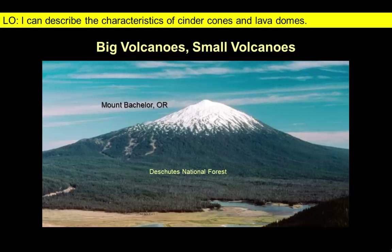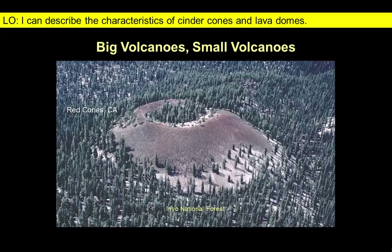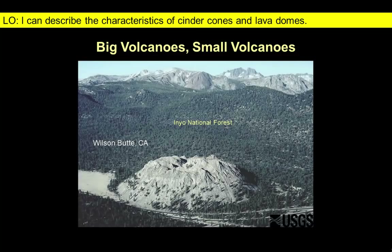One way to distinguish these volcanoes from each other is to compare the size of the volcano to nearby vegetation. Images of larger volcanoes often show them surrounded by forests. In contrast, you can often make out individual trees in images of cinder cones and lava domes.